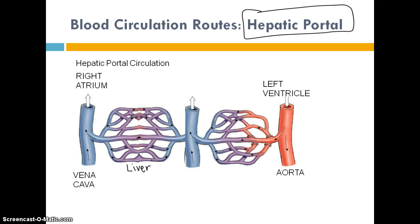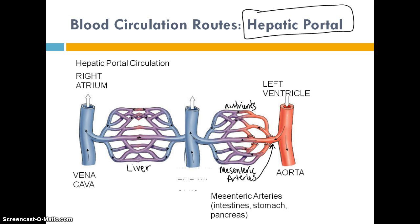One set of capillaries is found in the liver, and another set is found in the intestines — those are supplied by mesenteric arteries. The aorta subdivides into the mesenteric artery, and those mesenteric capillaries pick up all the good nutrients from the foods you eat in your intestines. Those mesenteric vessels then merge together into what's called the hepatic portal vein, which heads straight to the liver. The liver wants to capture those nutrients like glucose, so it can store them and prevent blood sugar from getting too high.